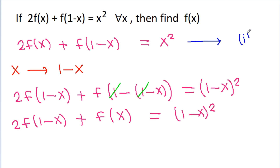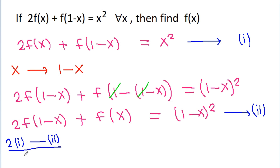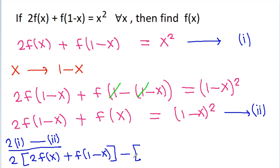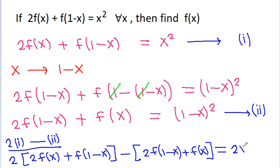Suppose this is equation 1 and this is equation 2. If we multiply equation 1 with 2 and subtract equation 2, then we get 2 times equation 1, which is 2f(x) plus f(1-x), minus equation 2, which is 2f(1-x) plus f(x). On the right-hand side, we get 2x squared minus (1-x) squared.